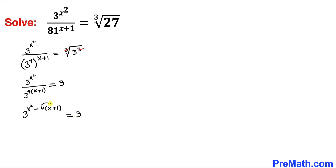Now let's go ahead and distribute this negative 4. So this could be written as 3 to the power x squared minus 4x minus 4.